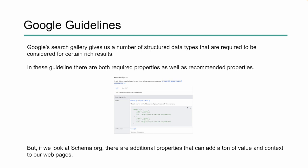Within the Google search gallery, we have guidelines on how to use structured data types if we want to rank for certain rich results. In these guidelines, we have both required properties as well as recommended properties. But when we look at schema.org, there are additional properties we can add that give a lot of context too. The search engines do recognize these. They may not have a direct impact on rich results, but supplying more context definitely helps with indexing and discoverability.